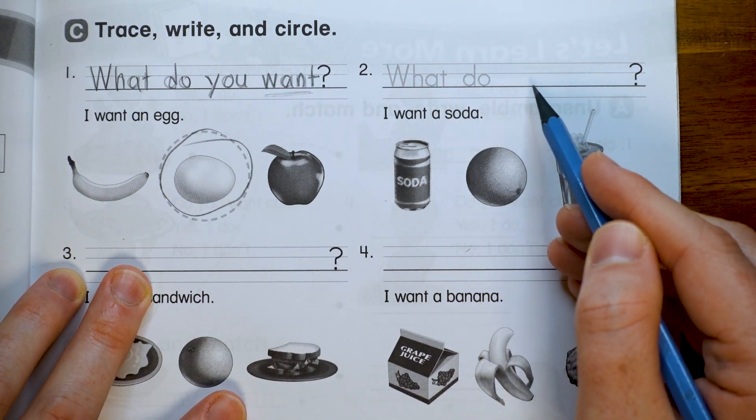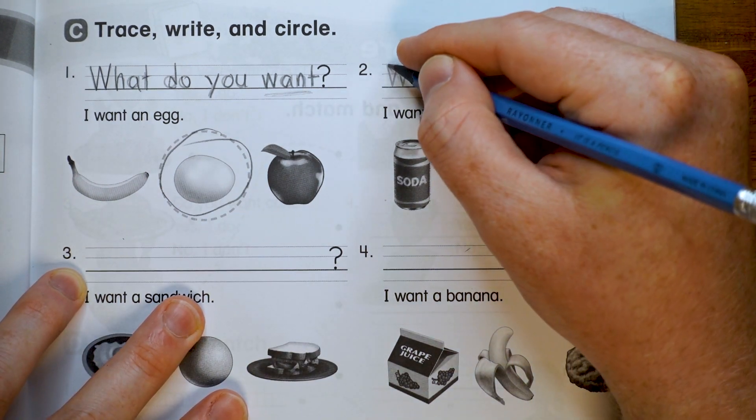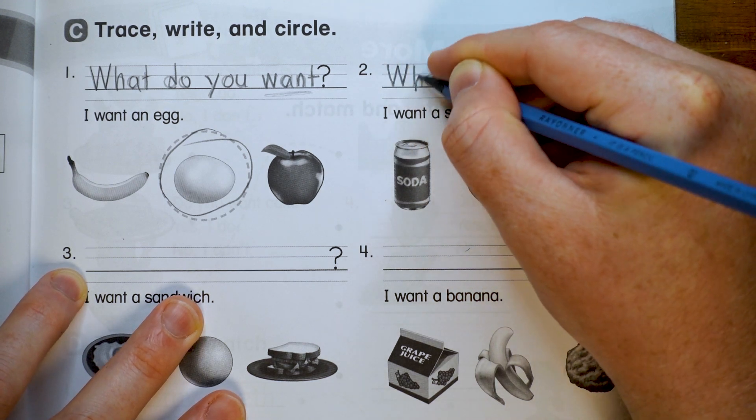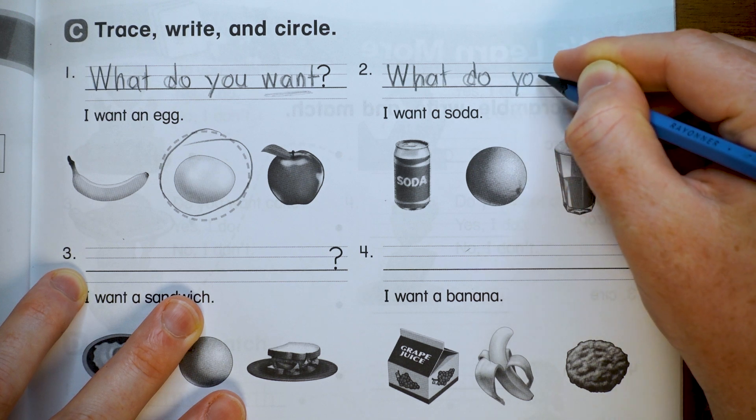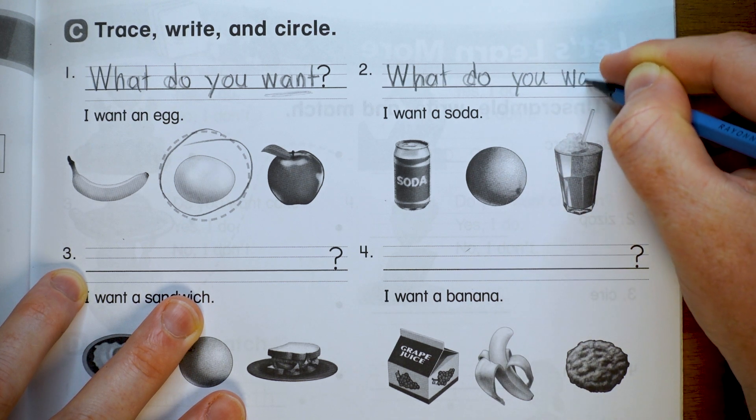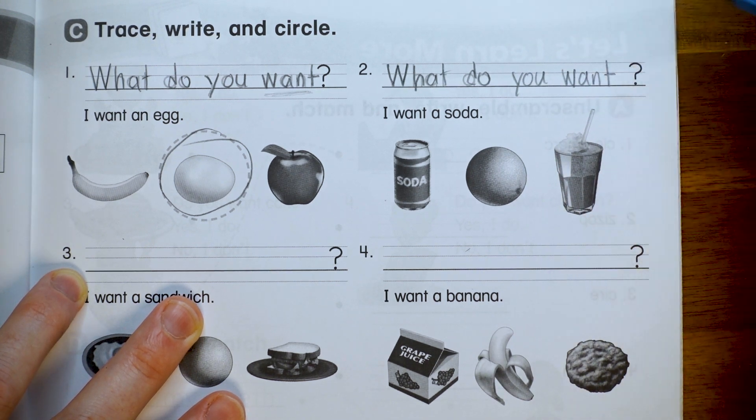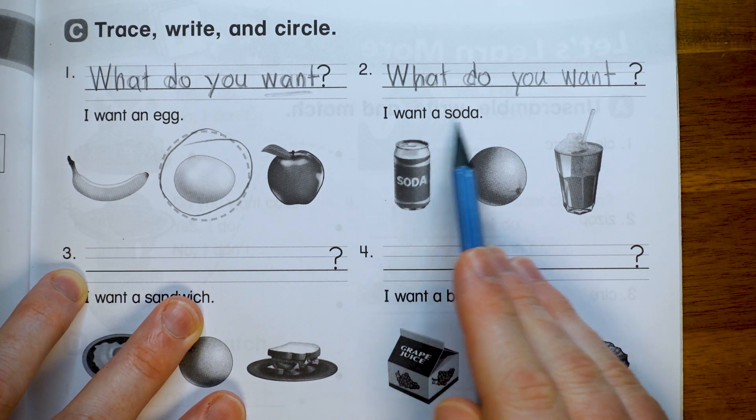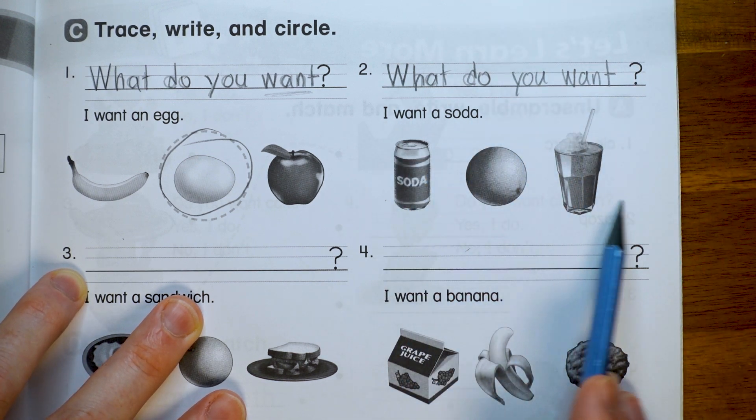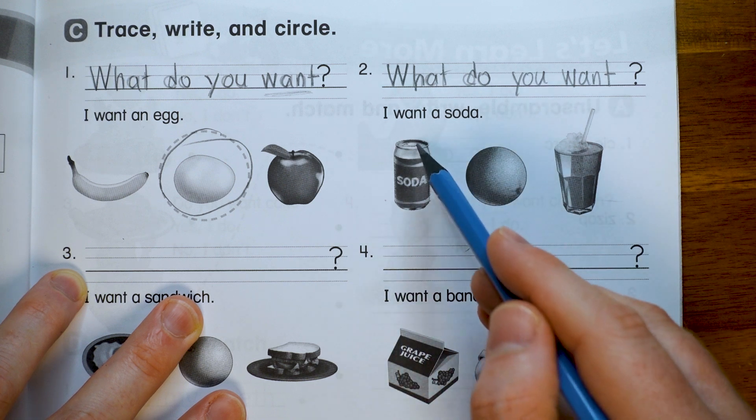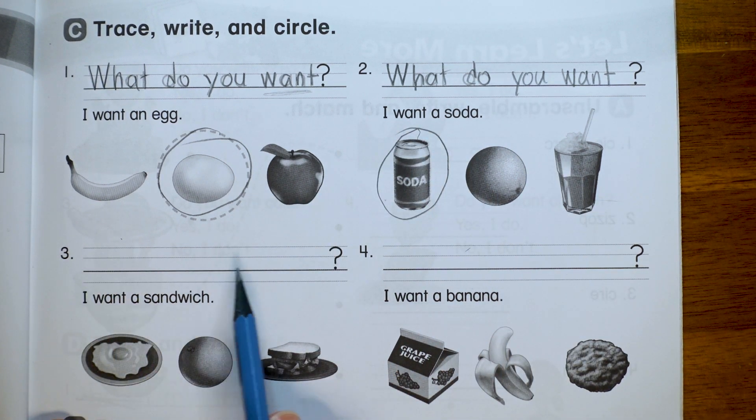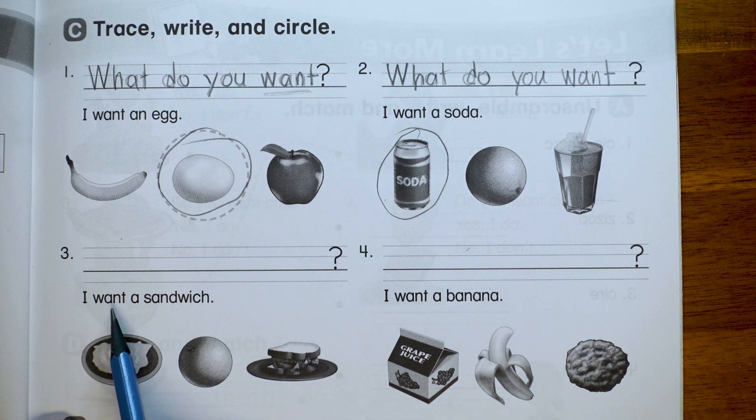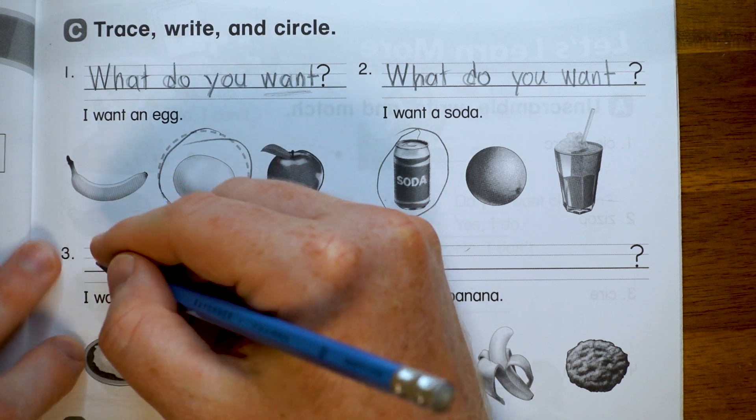Number two. What do you want? All right, we'll just make it the same as number one. What do you want? W-A-N-T. I want a soda. Where's the soda? There it is. Number three. I want a sandwich. Okay, this is the same question. Let's write it again.